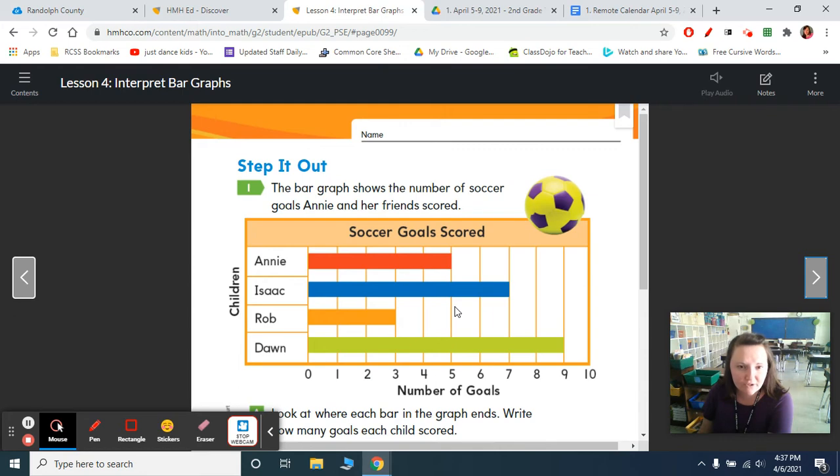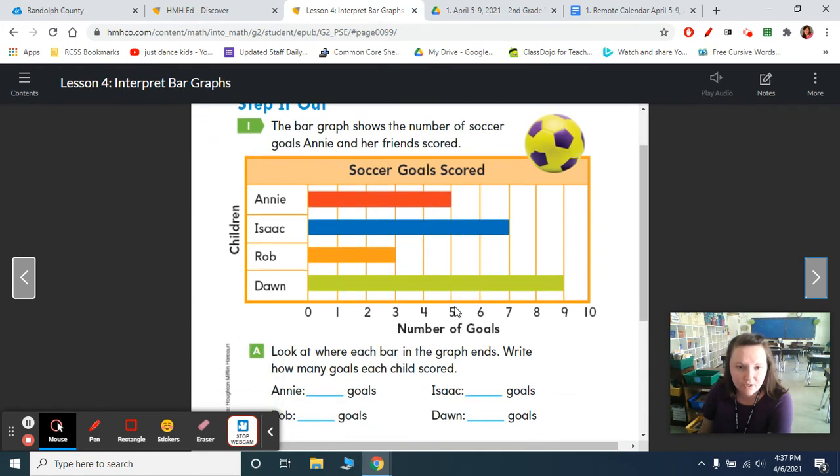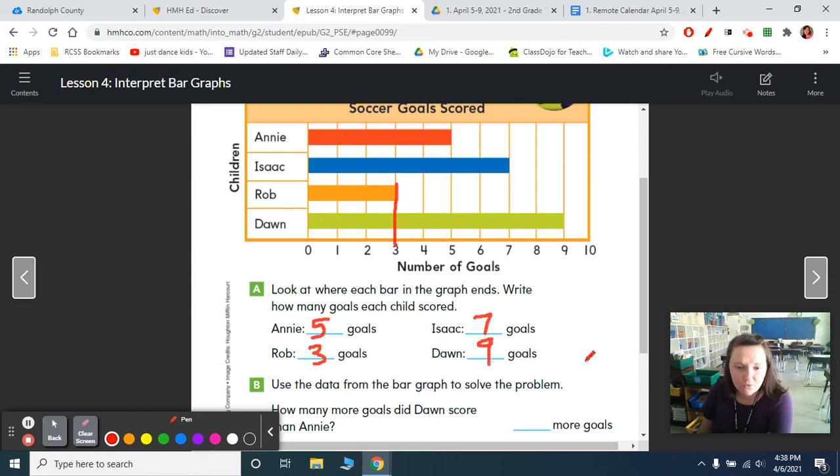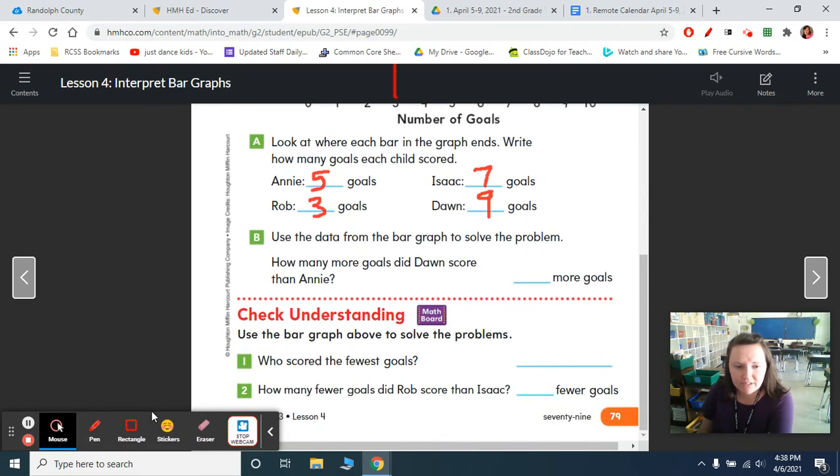Step it out. Okay, so the bar graph shows the number of soccer goals Annie and her friends scored. So Annie, we find that she lines up with the number five. She had five goals. Isaac had one, two, three, four, five, six, seven goals. Rob had three. He lines up with the three. And then we have Dawn who did nine goals. That's a lot of goals. All right, so now that we have our information written down, we can answer our questions.